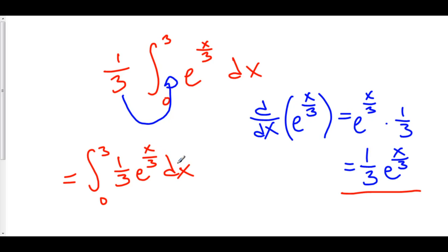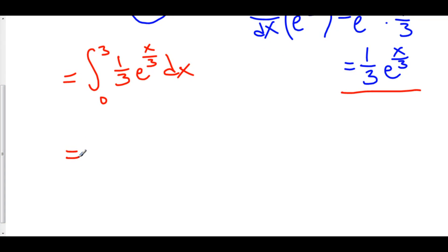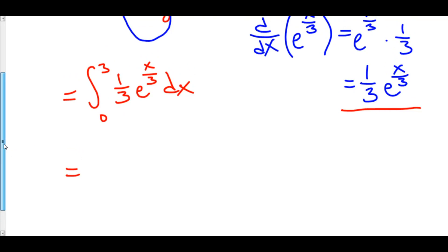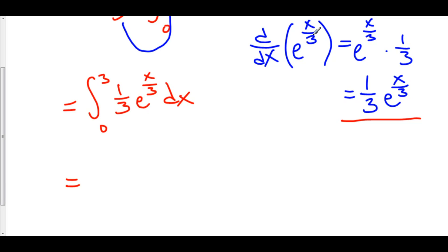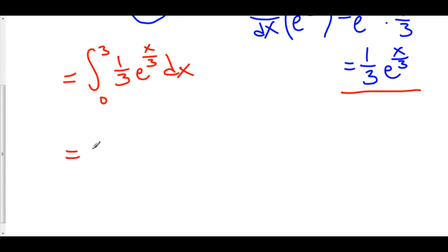Now remember that when you take the derivative of the antiderivative, you get the function itself. We wanted to find the antiderivative of e to the x over three, but we ended up finding — by pure chance — the antiderivative of one third e to the x over three, which suits us just fine because there's still a one third in there. The antiderivative of one third e to the x over three is e to the x over three. So this is equal to e to the x over three evaluated from zero to three.